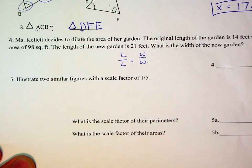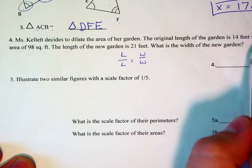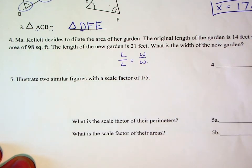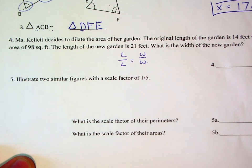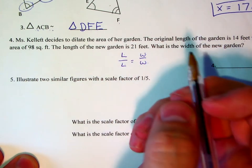And in order to do that, I need to know both the length and the width for the original garden. We're given the length of the original garden, but we're not given the width of the original garden, so we need to calculate that.